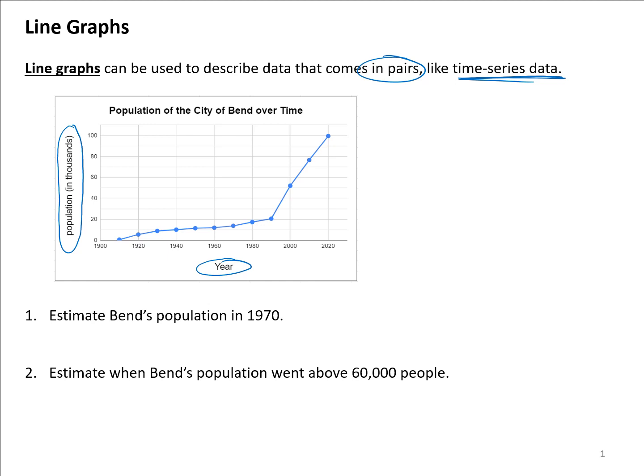Each of these points that we see on the graph represents a pair of data points. For instance, this last point here is at year 2020 and it's approximately about a hundred, so that would be a hundred thousand people. So in 2020 the population of Bend is a hundred thousand. It's pairs of data - each one of those points is showing you what year you're at and what the population was in Bend at that time.